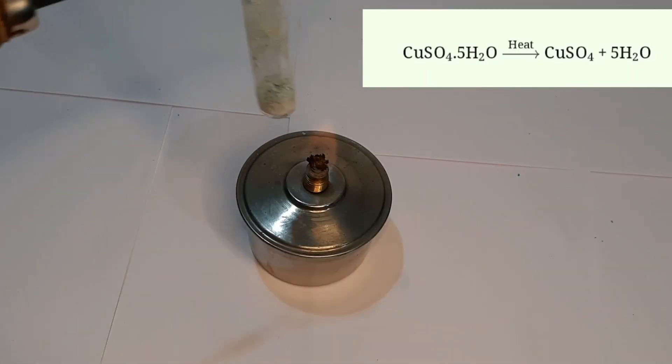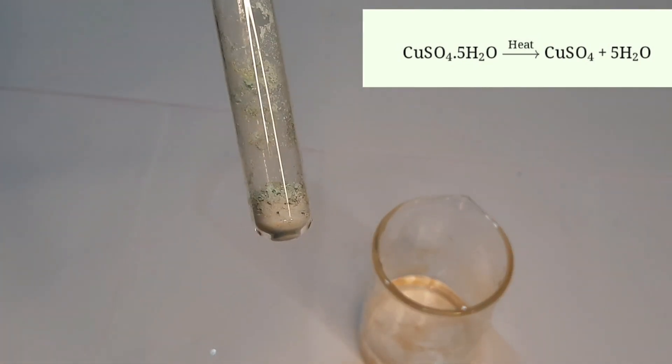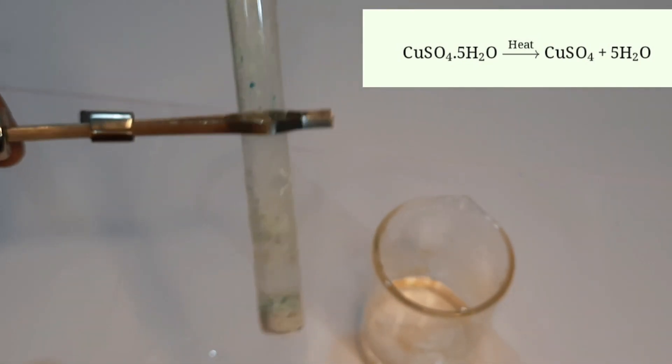When copper sulfate crystals are heated strongly, they lose all the water of crystallization and form anhydrous copper sulfate which is white in color.